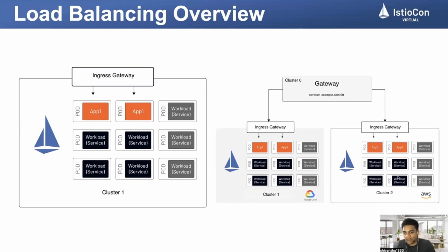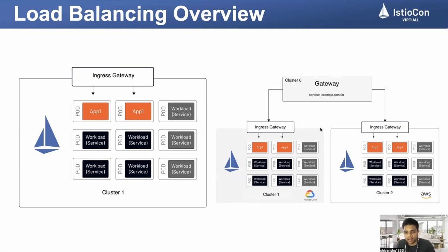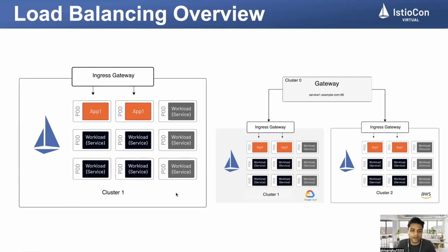On my right, I have a multi-cluster setup with cluster one and cluster two. I have a multi-cluster gateway which is distributing traffic to cluster one and cluster two. How would I configure load balancing in this scenario — for traffic getting distributed to cluster one and cluster two, and then traffic getting distributed between different instances in a given cluster? The idea is to first understand a single cluster setup and then try to extend that knowledge to a multi-cluster setup.